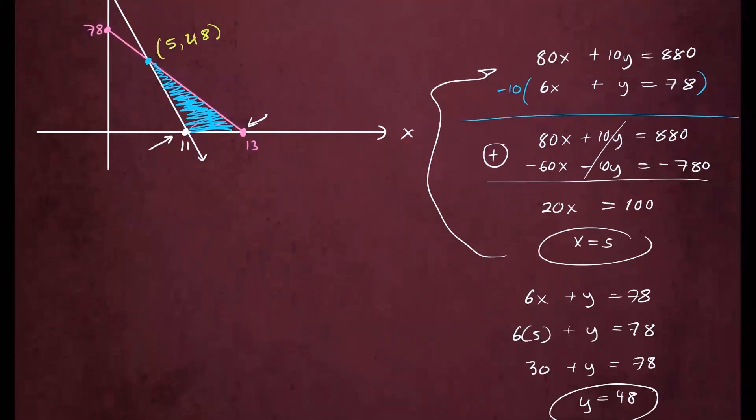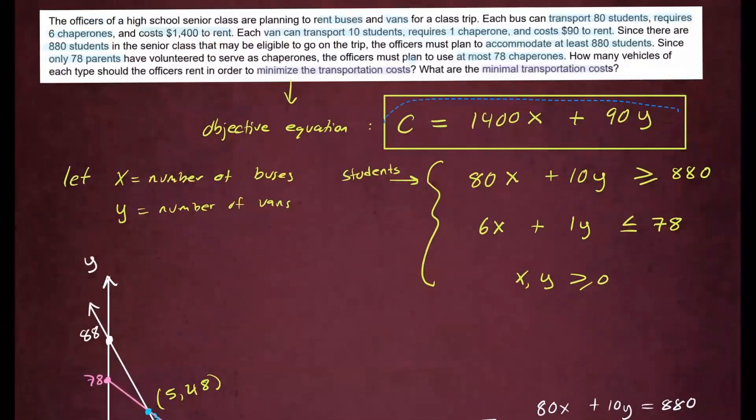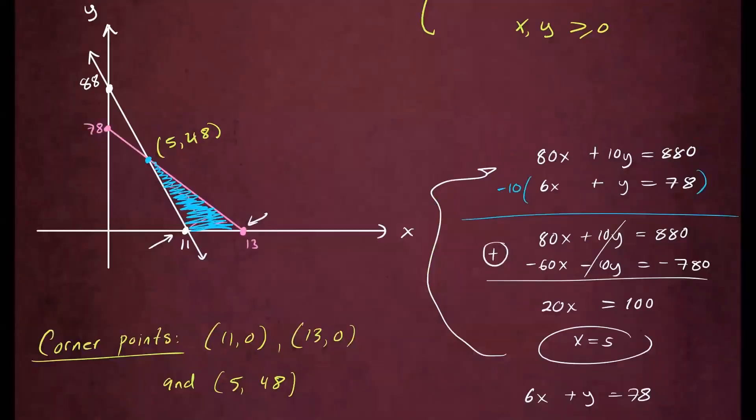So everything is done. Now we can test them. So our corner points for this particular problem are (11, 0), (13, 0), and (5, 48). Now we're going to plug them into our objective function, which is right here, the cost function. So I'll just take this and place it down here so we can test. So let's see what are the costs for these particular corner points.